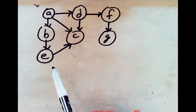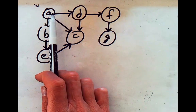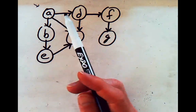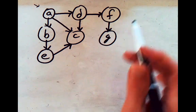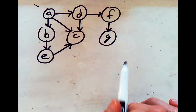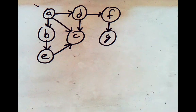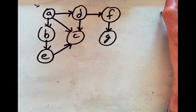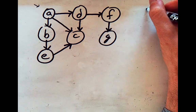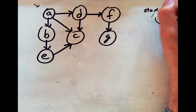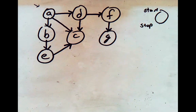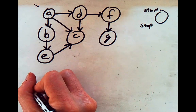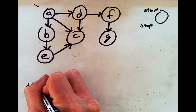We'll work through a graph similar to the ones we've been using, but note this time the graph is directed. I'm going to start at node A. I've simplified the graph so everything is actually connected. I'll use notation on each node: the upper left indicates the start time and the bottom right indicates the stop time. I'll keep track of my time, starting arbitrarily at time one.